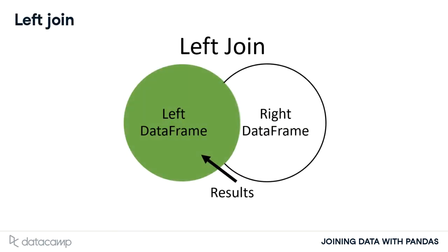In this lesson, we will talk about the idea of a left join. A left join returns all rows of data from the left table and only those rows from the right table where key columns match.